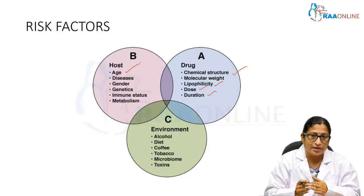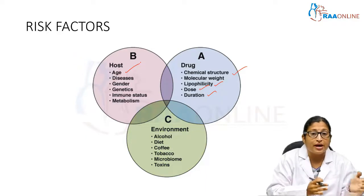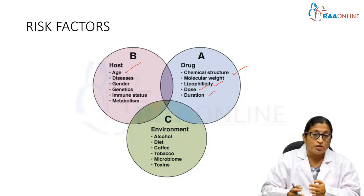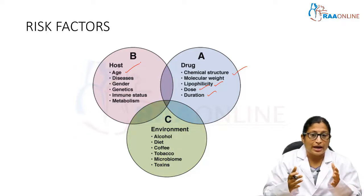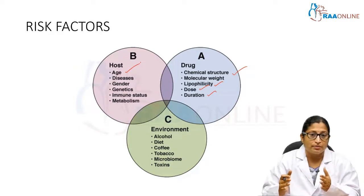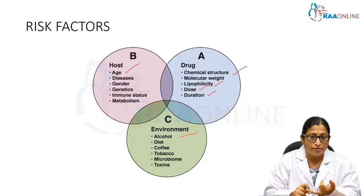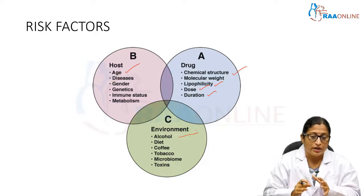Immune status and drug metabolism also matter. Certain individuals metabolize drugs faster — they are rapid metabolizers — while others are intermediate or slow metabolizers. This altered metabolism among individuals affects who will develop drug-induced liver injury. Environmental factors such as consumption of alcohol, coffee, tobacco, and certain toxins also play a role.